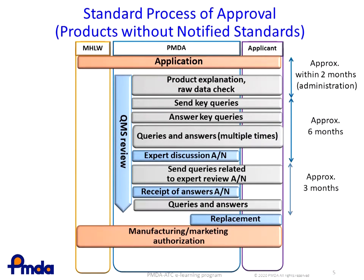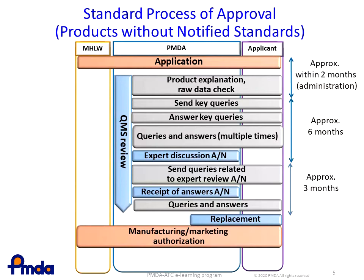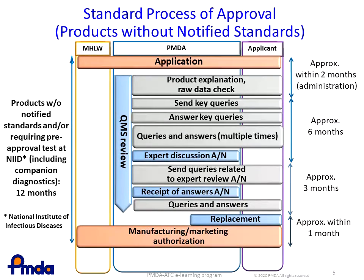After that, the applicant resubmits some of the documents for review, and if they are acceptable, authorization of manufacturing and marketing will be given within one month. In this case, the total time from the application to approval is approximately 12 months. The MHLW publishes committee reports for these products.